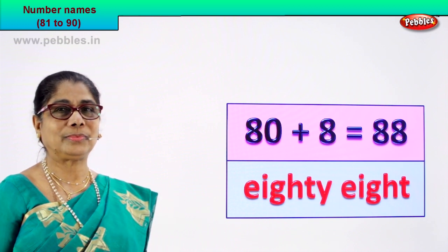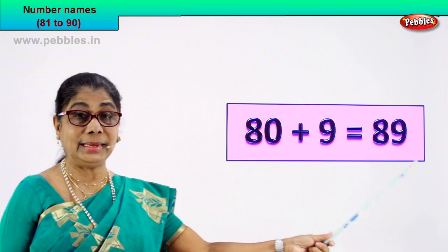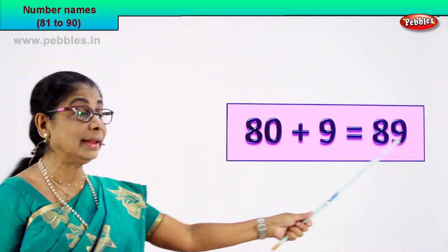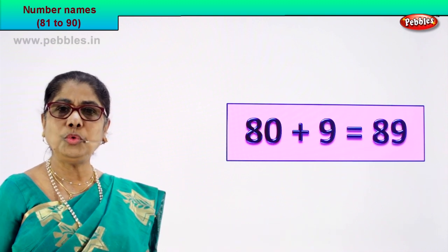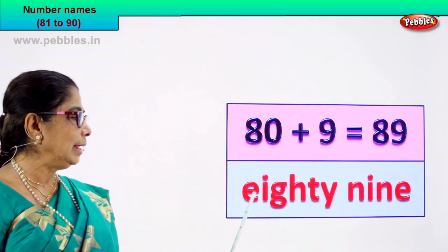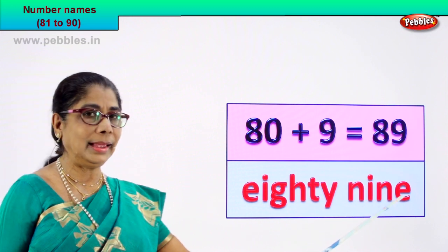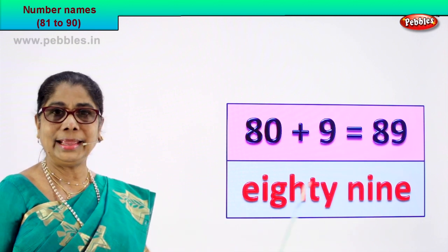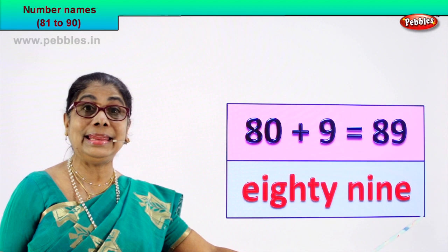Shall we take the next numeral? 80 plus 9 is equal to 89. The numeral 8 and 9, 89. You know to spell 80 and 9. Eighty — E-I-G-H-T-Y — and nine — N-I-N-E. The number name for the numeral 89 is eighty-nine.